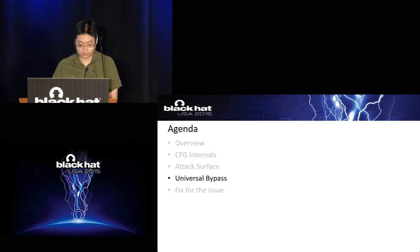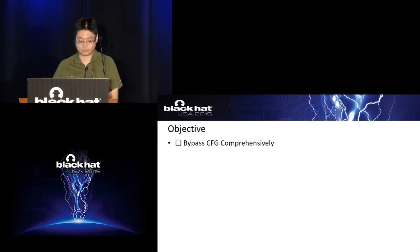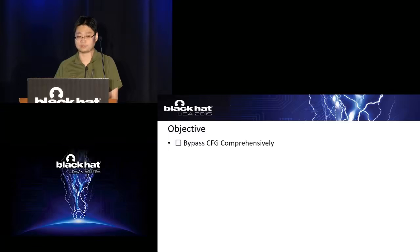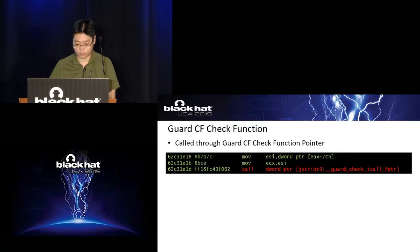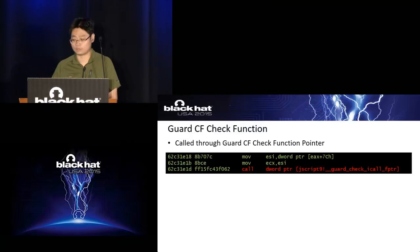Next I will show you the universal bypass technique. The objective of the universal bypass is to bypass CFG comprehensively — that is to say, when we use this technique, we can make any exploit technique that was mitigated by CFG exploitable again, as if there were no CFG. Let's review how the guard CF check function is called: it is called through a function pointer, meaning it is an indirect call itself. So if we override this function pointer, we can do some interesting things.